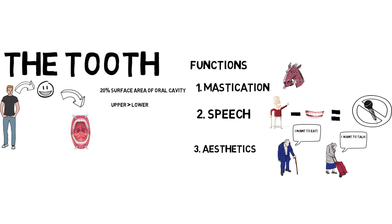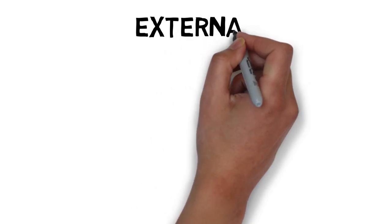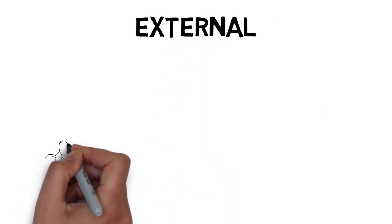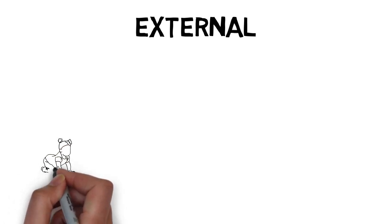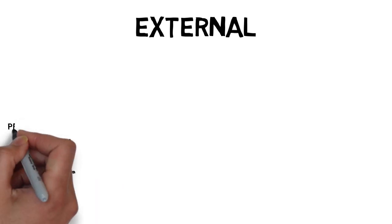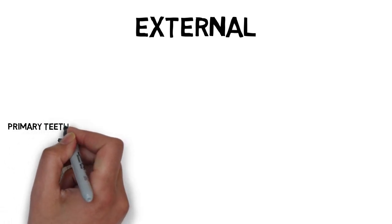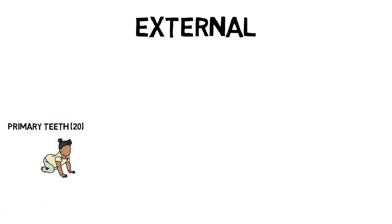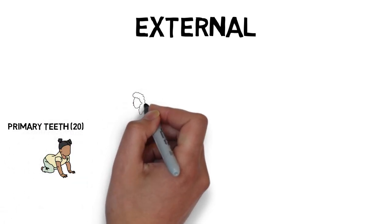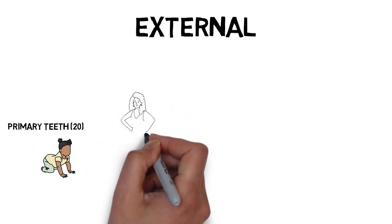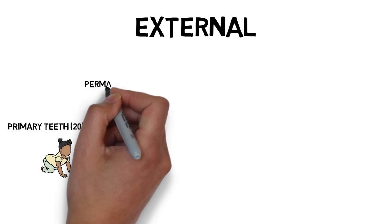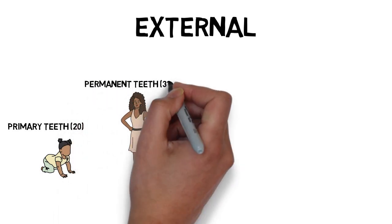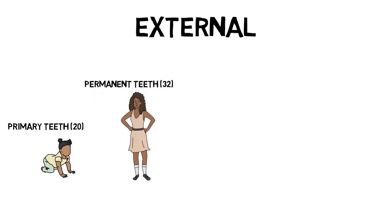Externally, we have two sets of teeth. First are the primary teeth, which are 20 in number. Then we have permanent teeth, which are 32 in number — though the count can range from 28 to 32. Primary teeth, once lost, are replaced by permanent teeth. But permanent teeth, once lost, cannot be replaced — there are no succeeding teeth for permanent teeth. Therefore, in dentistry, preserving these permanent teeth is our main goal to achieve lifelong natural teeth.